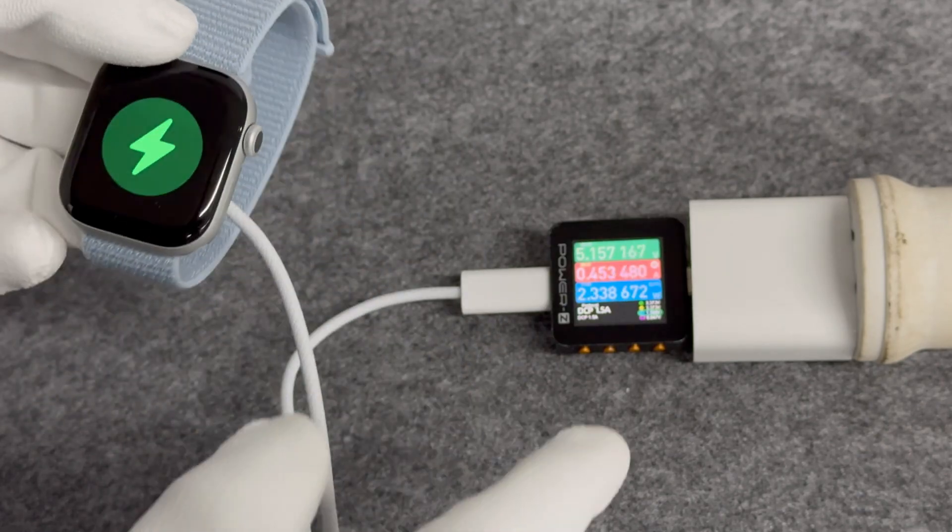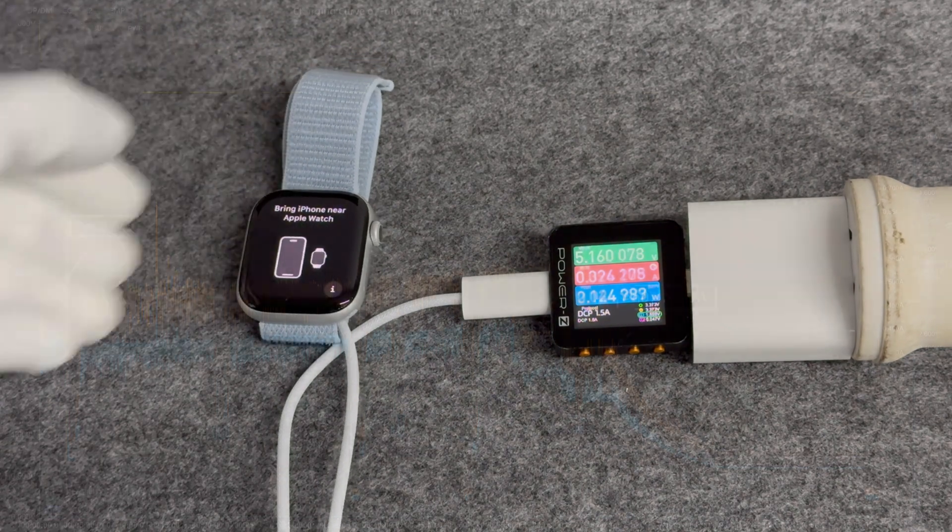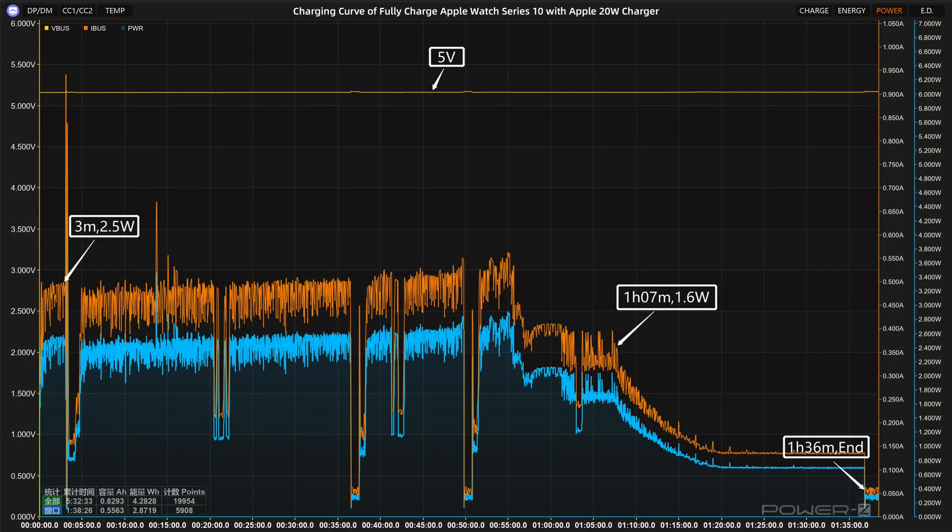Next, let's do the full charging test. Under normal conditions, the input power is between 2 to 3 watts. We use the Apple 20 watt charger and the original cable to fully charge the Apple Watch Series 10, and put them into a 25 degrees Celsius thermotank throughout the test.